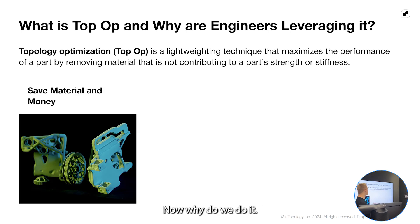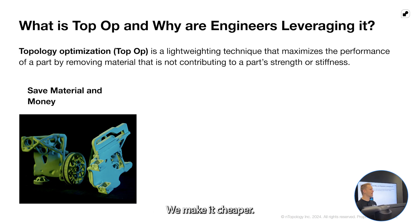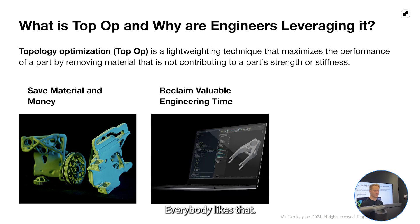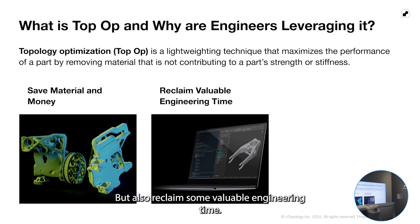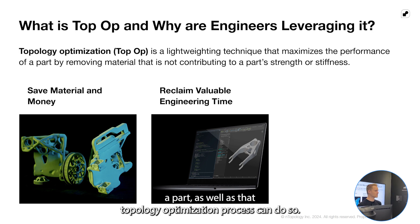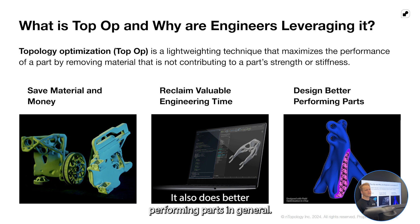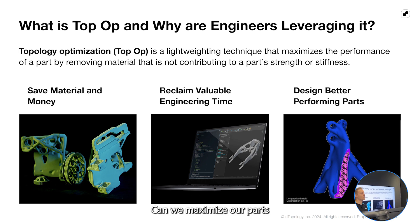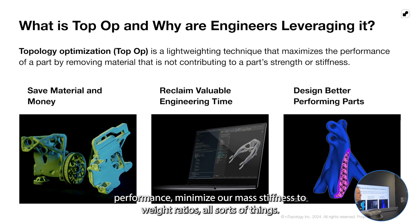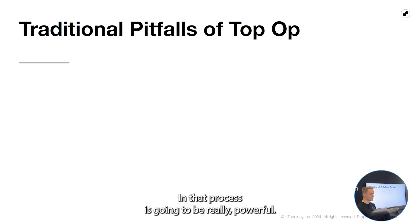Why do we use topology optimization? Save money and material — can we make it lighter, can we make it cheaper? Everybody likes that. But also reclaim some valuable engineering time. It's pretty much impossible for a design engineer to manually optimize a part as well as the topology optimization process can. And also better-performing parts in general — maximizing part performance, minimizing mass, improving stiffness-to-weight ratios.